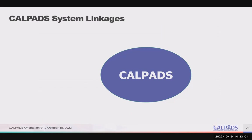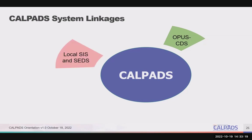Here are the statewide systems we've covered and how they link with one another, starting with Opus CDS, which has information about all California schools and links to CALPADS to specify what schools are expected to report. Data is extracted from the local student information system and special education data systems and then uploaded to CALPADS. Some data from CALPADS can be extracted and loaded back into a local system. CBEDS Aura contains the residual aggregates not collected in CALPADS, like school calendars, classified staff counts, graduation requirements, and technology data.